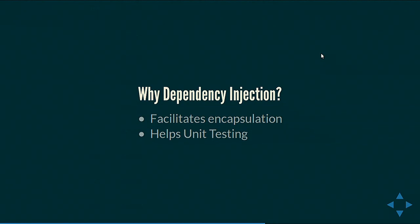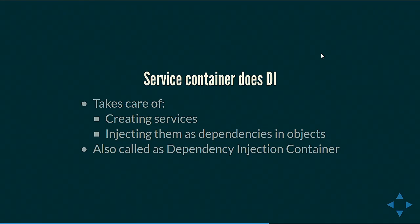With dependency injection, the object does not need to be concerned with how the dependency is created because it is being passed to it. Another reason is it helps with unit testing. In unit testing we have the concept of mocking, where we create mock objects so that we can test the functionality, and creating mock objects is helped by dependency injection. Now, the service container we talked about is actually the object that helps with this dependency injection — it takes care of creating these services and then passing them as dependencies to other objects. That is the reason the service container is also called the dependency injection container. In Drupal these terms are interchangeable: service container and dependency injection container.